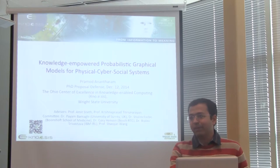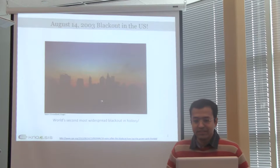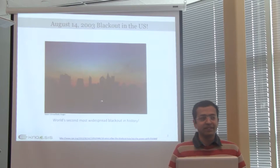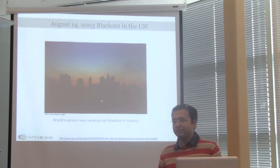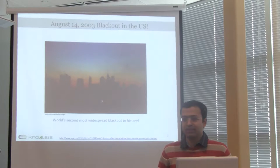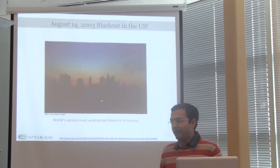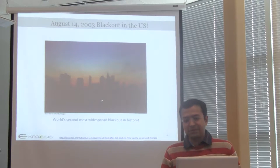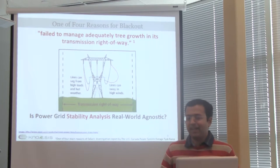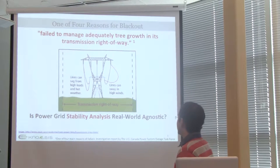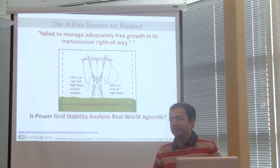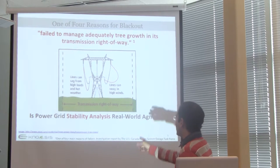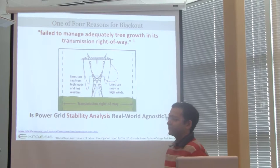I would like to start my talk with a real-world example. How many of you remember the 2003 blackout that happened in the northeast of the United States? That was a massive blackout, affecting around 50 million people and 6 billion in lost revenue. Such blackouts have happened in the past. The investigation found that one of the main reasons for failure was a lack of maintenance of tree growth within the transmission right-of-way.